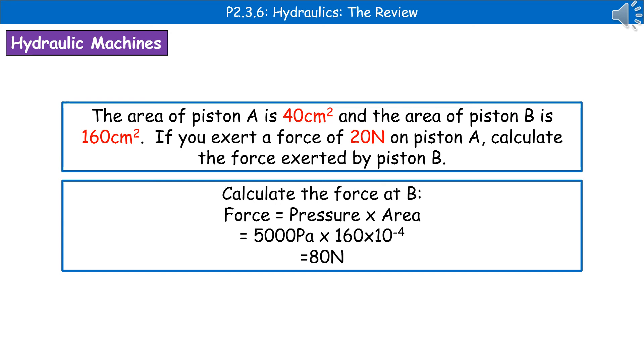Once we've got that, we can now calculate the force at B, because force is pressure times area. We've now got the pressure because the pressure throughout the system is the same, and therefore we've got pressure and we've got the area.